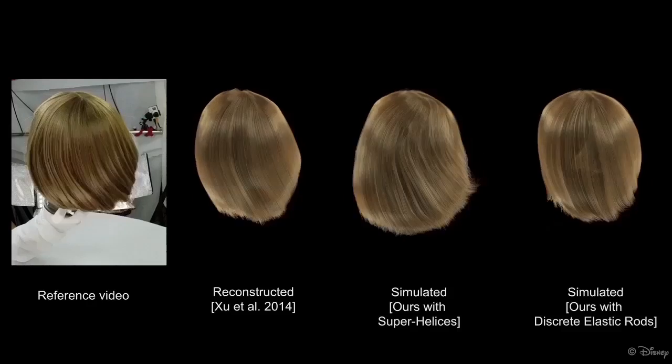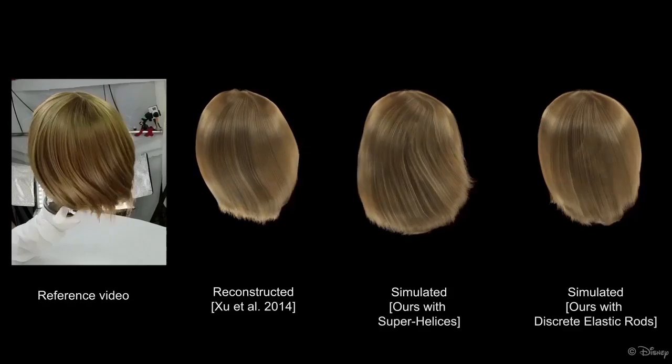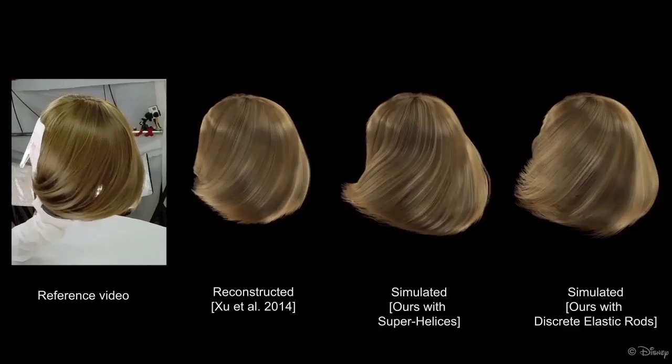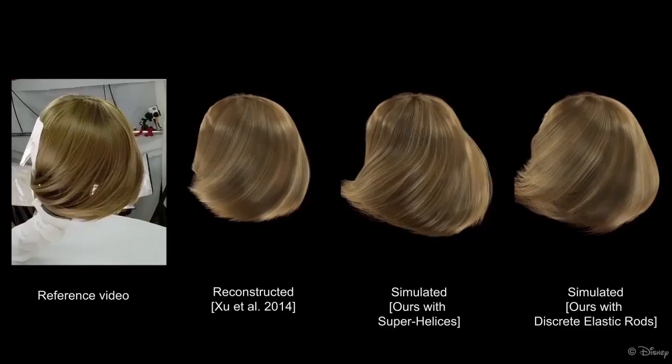We demonstrate the versatility of our approach by applying our optimization on image data captured by a previous method, which focused on per-strand hair geometry capture. In this example, we also demonstrate the flexibility of our framework by optimizing parameters for both the super helices model and the discrete elastic rods model. While simulation model comparison is not the focus of our work, this example shows subtle differences between the two models in terms of their capabilities.